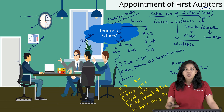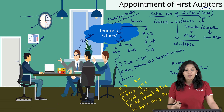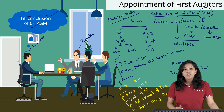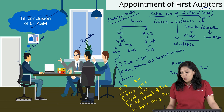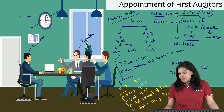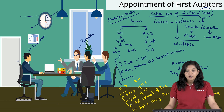The next question is the tenure of office of these first auditors. The first auditors appointed by the Board of Directors and approved by shareholders will hold office from the conclusion of the first AGM till the conclusion of the sixth AGM.